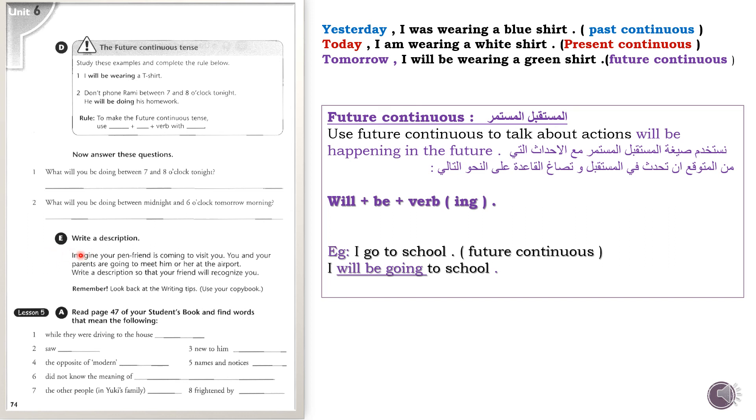Write a description. Imagine your boyfriend is coming to visit you from another country to visit you. You and your parents are going to meet him or her at the airport. Write a description so that your friend will recognize you among those present there. Remember, look back at the writing tips. Use your copy book. Write this in your notebooks.